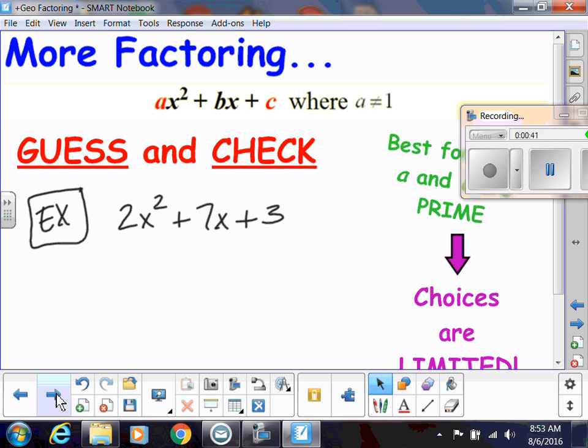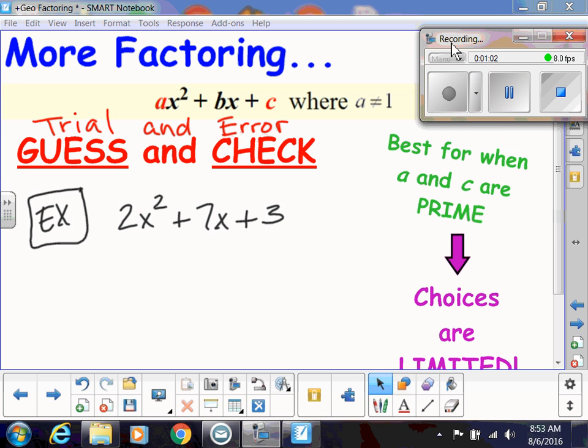So this is called guess and check. I kind of like the word trial and error a little better. But whatever you want to call it, whether it's trial and error or guess and check, you are making an informed guess or your trial is going to be well-informed. And this method is very, very good. It's easier when a and c are prime. When your first number and your last number are prime numbers, because that means your choices are limited. Your trial and error will be a lot shorter.